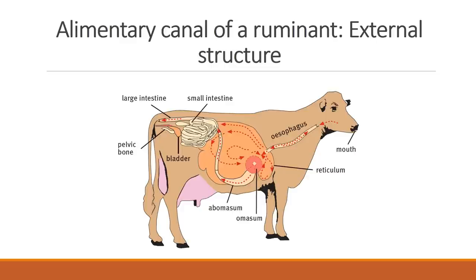The external structure of the alimentary canal of ruminants and non-ruminants is different. The structure in front of us is of a ruminant — a cow. Cows as well as sheep will have the same structure. Their alimentary canal consists of the mouth, the esophagus, and a forestomach divided into four compartments: the rumen, reticulum, omasum, and abomasum. Then it has the small intestine as well as the large intestine.